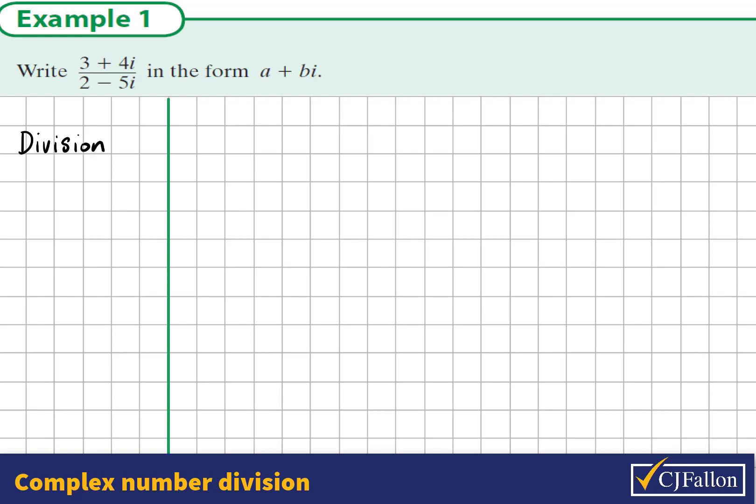This is a complex division question. We have this fraction, 3 plus 4i over 2 minus 5i. The denominator is a compound complex number with an imaginary part. We would like to make the denominator real.